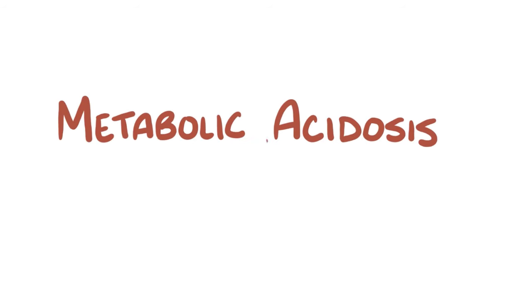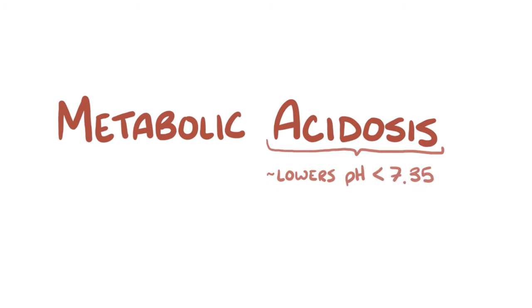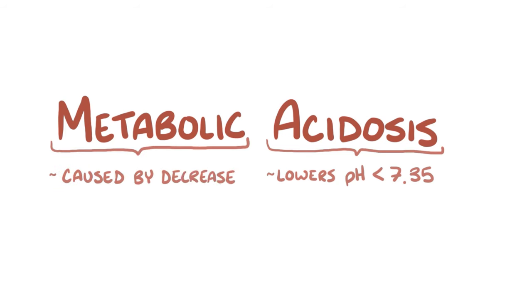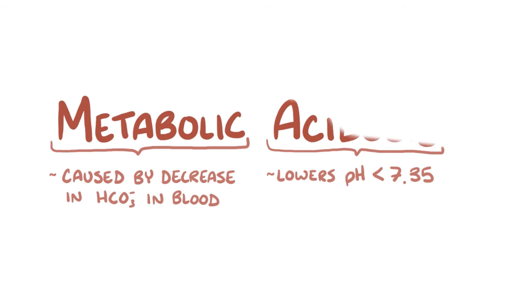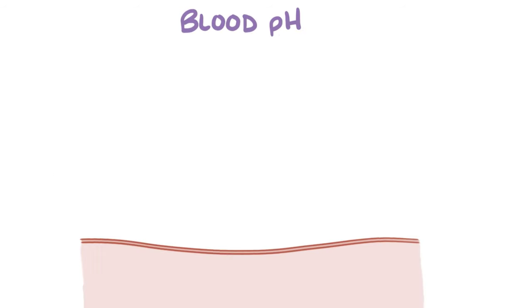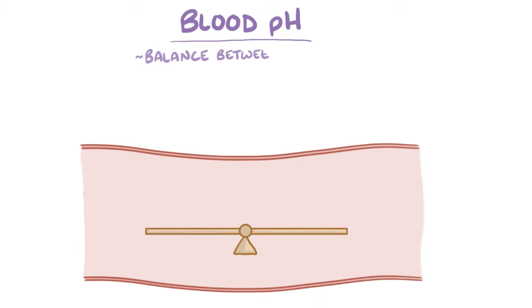With metabolic acidosis, acidosis refers to a process that lowers blood pH below 7.35, and metabolic refers to the fact that it's a problem caused by a decrease in the bicarbonate concentration in the blood. Normally, blood pH depends on the balance or ratio between the concentration of bases, which increase the pH, and acids, which decrease the pH.